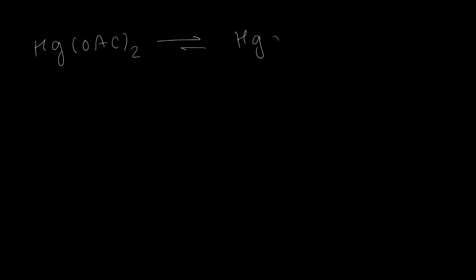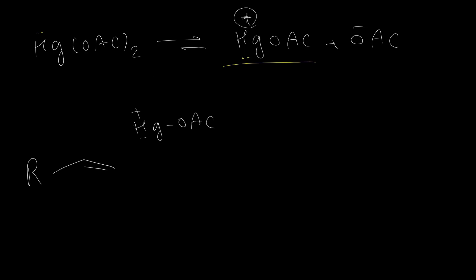Mercury acetate can dissociate to mercury OAc positive plus one acetate anion. This mercury acetate cation is an electrophile and it can easily react with the double bond in the alkene. Addition of this intermediate to the alkene forms a mercuronium intermediate.